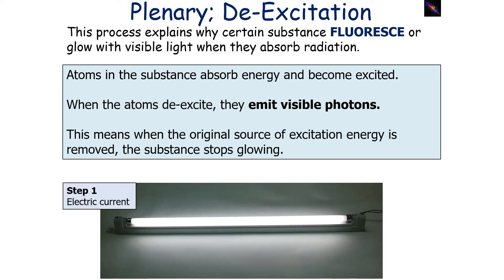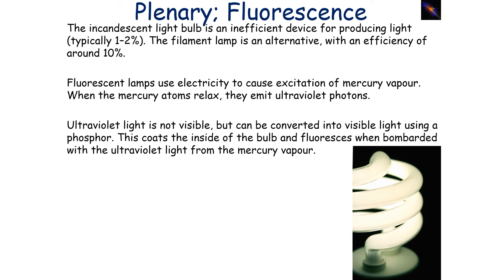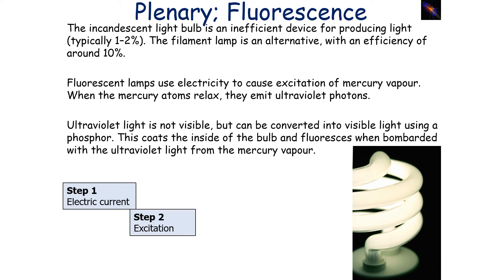An example of this is the fluorescent tube. The first step is passing an electrical current through the fluorescent tube, which causes excitation in the atoms inside. The atoms then relax and emit photons, which we can observe. The incandescent light bulb is only about 1–2% efficient, whilst the filament lamp has an efficiency of about 10%. Fluorescent lamps use electricity to cause excitation of mercury vapour. When the mercury atoms relax, they emit ultraviolet photons. Ultraviolet light is not visible but can be converted into visible light using phosphor, which coats the inside of the bulb and fluoresces when bombarded with ultraviolet photons from the mercury vapour.